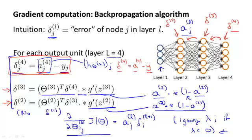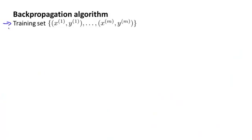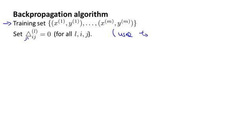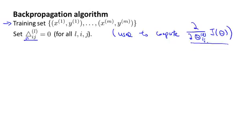So let's put it all together to talk about how to implement backpropagation to compute derivatives with respect to your parameters, for the case of when we have a large training set, not just a training set of one example. Suppose we have a training set of m examples. The first thing we're going to do is set these capital delta l subscript ij — where the triangle symbol is the capital Greek letter delta — equal to zero for all values of l, i, j. Eventually, this capital delta lij will be used to compute the partial derivative terms. These deltas are going to be used as accumulators that will slowly add things to in order to compute these partial derivatives.